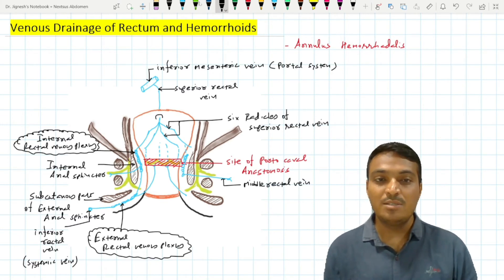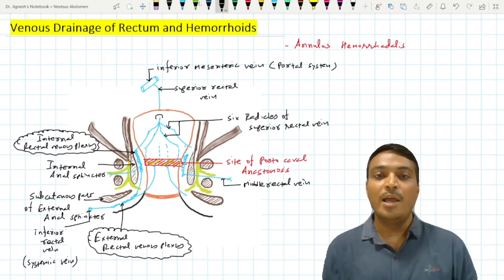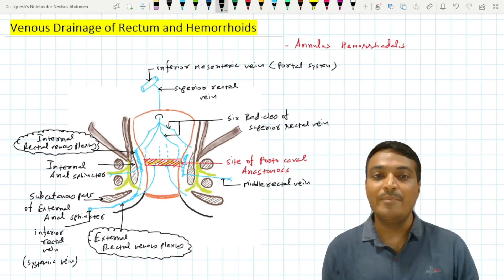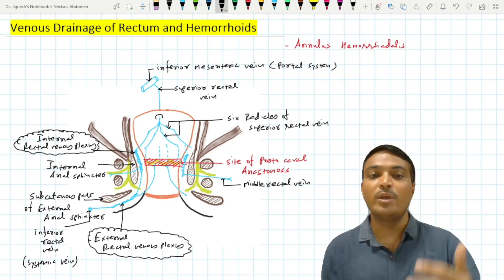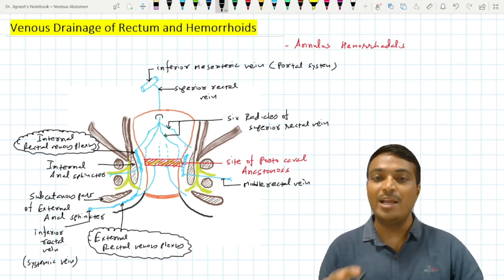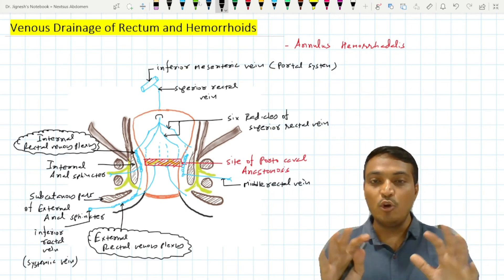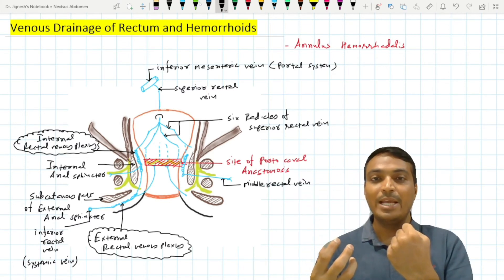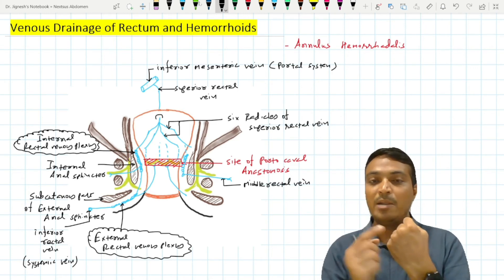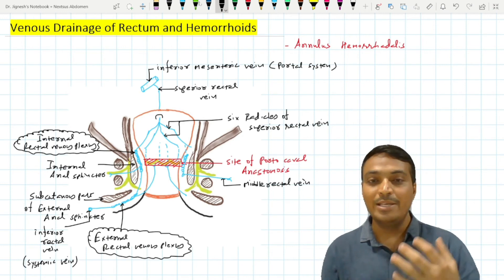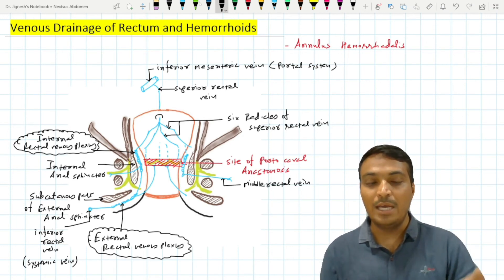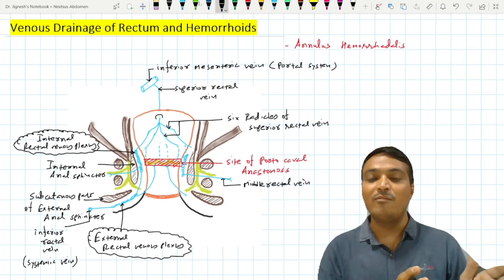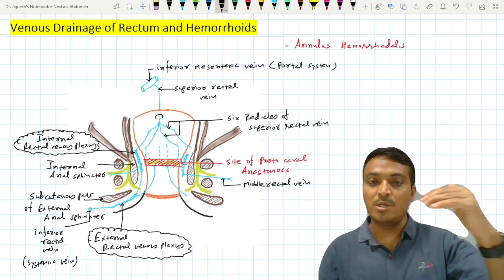The site of portocaval anastomosis is important for understanding hemorrhoids. In portal hypertension, pressure in the inferior mesenteric vein increases, causing engorgement of the radicals of the superior rectal vein. These radicals are covered by mucous membrane and, with further pressure increase, may rupture, leading to severe bleeding. This bleeding is painless because the area above the pectinate line is supplied by autonomic nerves only. Painless rectal bleeding can therefore be a sign of portal hypertension.